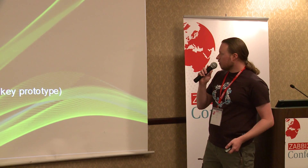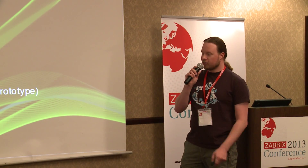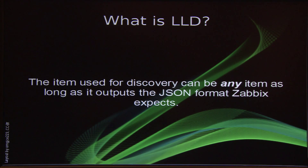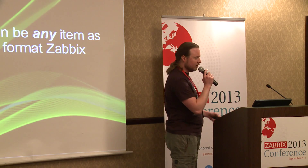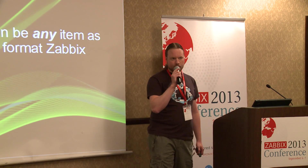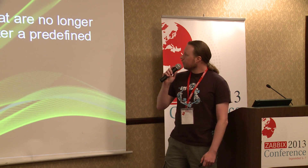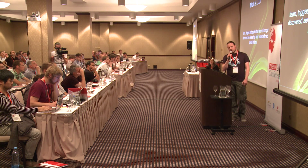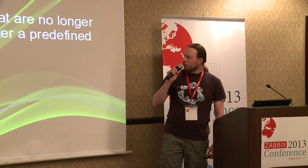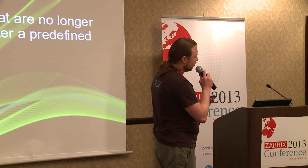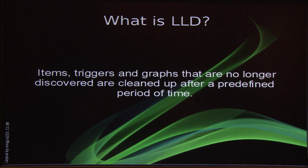You can use the macros that the LLD uses in a lot of places in Zabbix — of course in the item prototypes, also in the triggers, and for names in the graphs. You can use any item in Zabbix for automatic discovery, so you're not limited to passive or active items. You can also use trapper items or even user parameters. All the stuff that's automatically generated will be cleaned up by Zabbix after a set limit of time. If a disk was removed and is not mounted anymore, it will automatically clean up all the items, triggers, and graphs that were generated for that mount point.